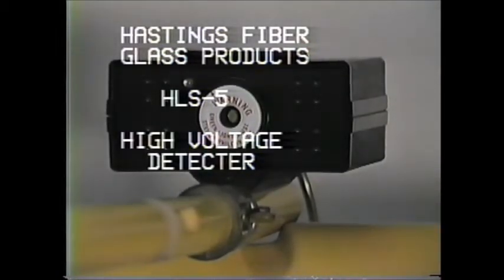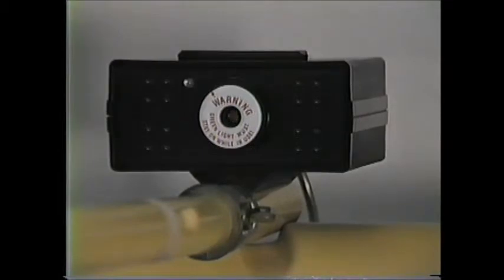The HLS 5 is a lightweight electronically controlled high voltage detector designed to detect the presence or absence of normal operating voltages as well as induced voltages on utility system lines. The HLS 5 utilizes both audio and visual signals to alert the operator that voltage is present.